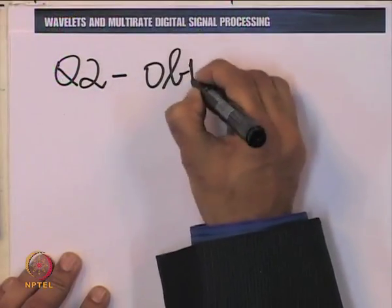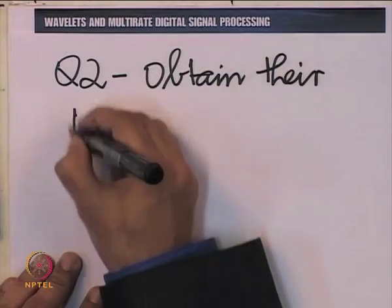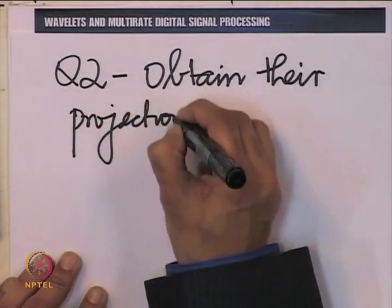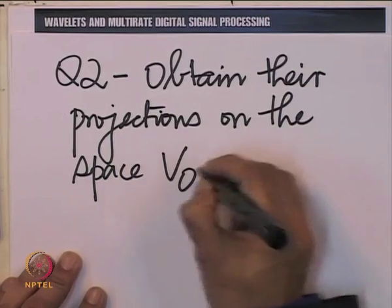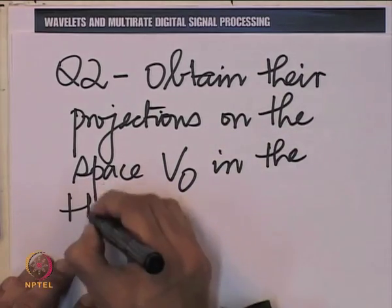Now we would like to apply the idea of piecewise constant approximation to these functions. So let us find the projection of each of these functions on the space V₀ as we know it in the Haar multi-resolution analysis. Question 2 before us is: obtain their projections in the space V₀ in the Haar multi-resolution analysis.